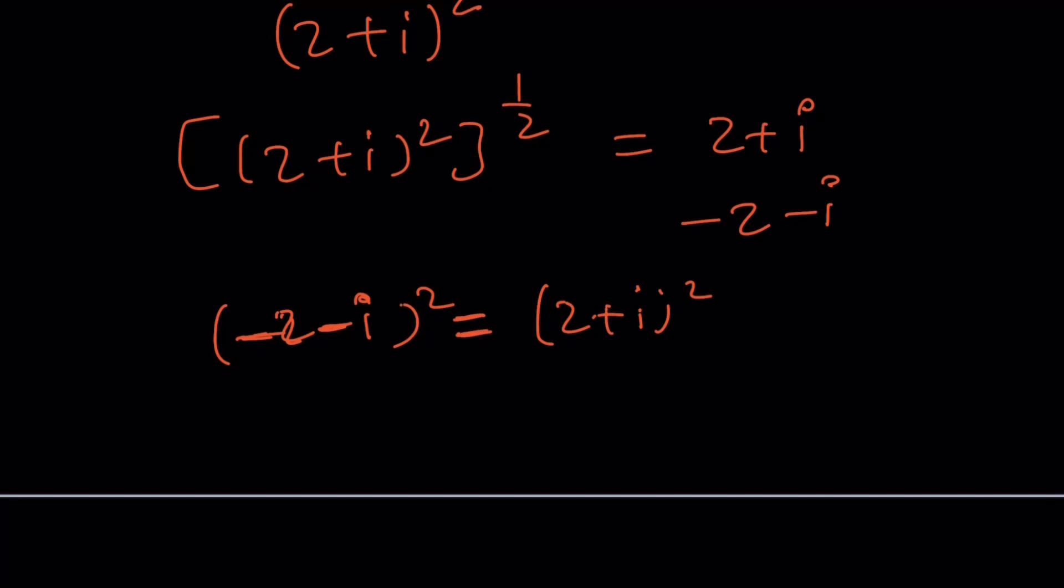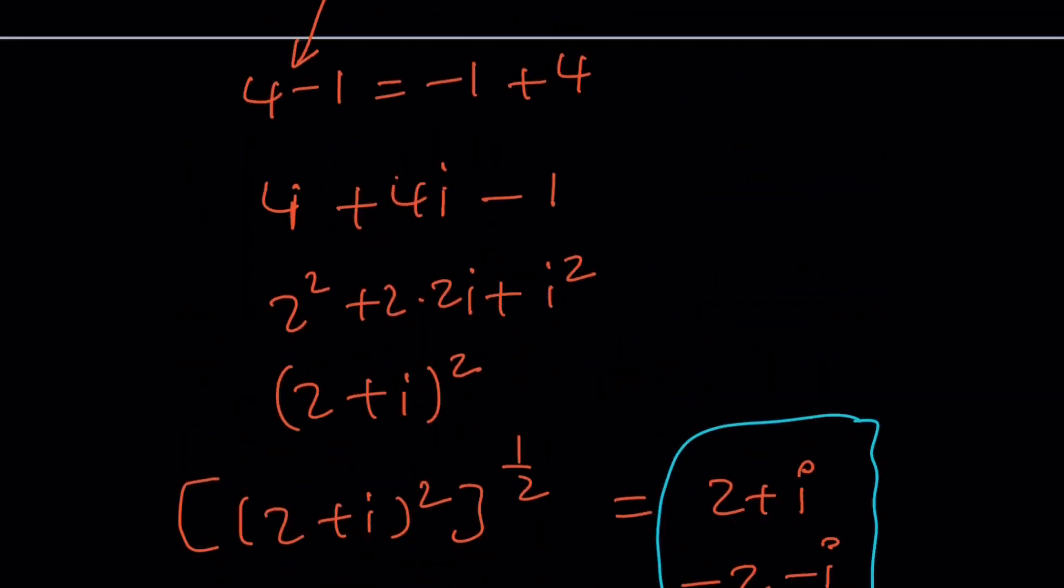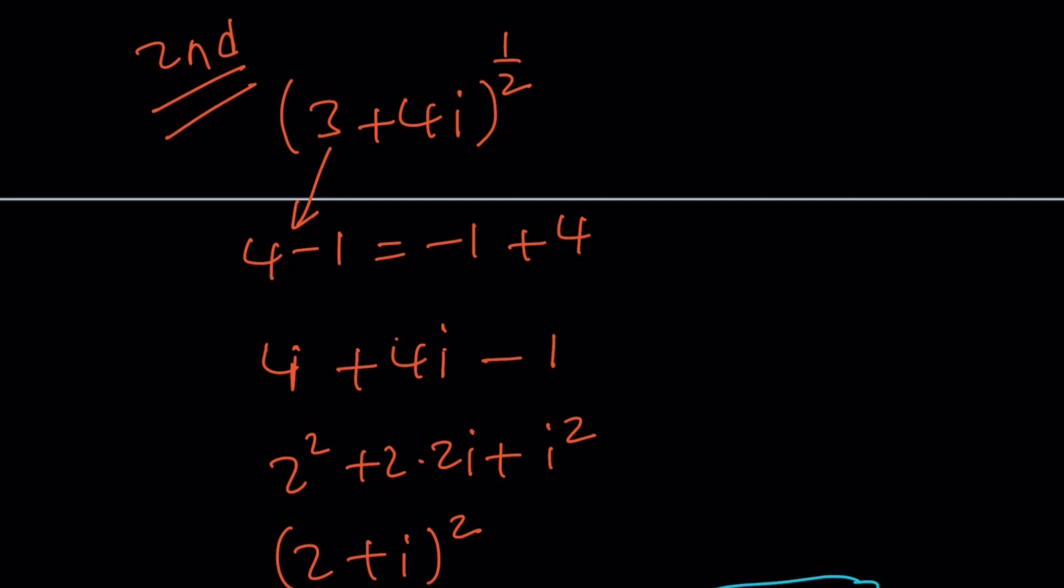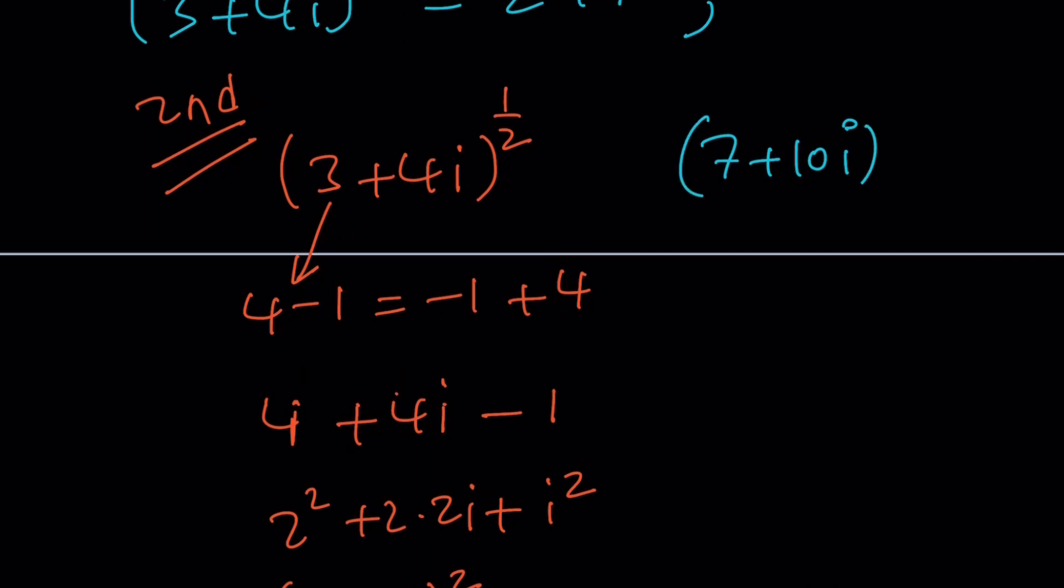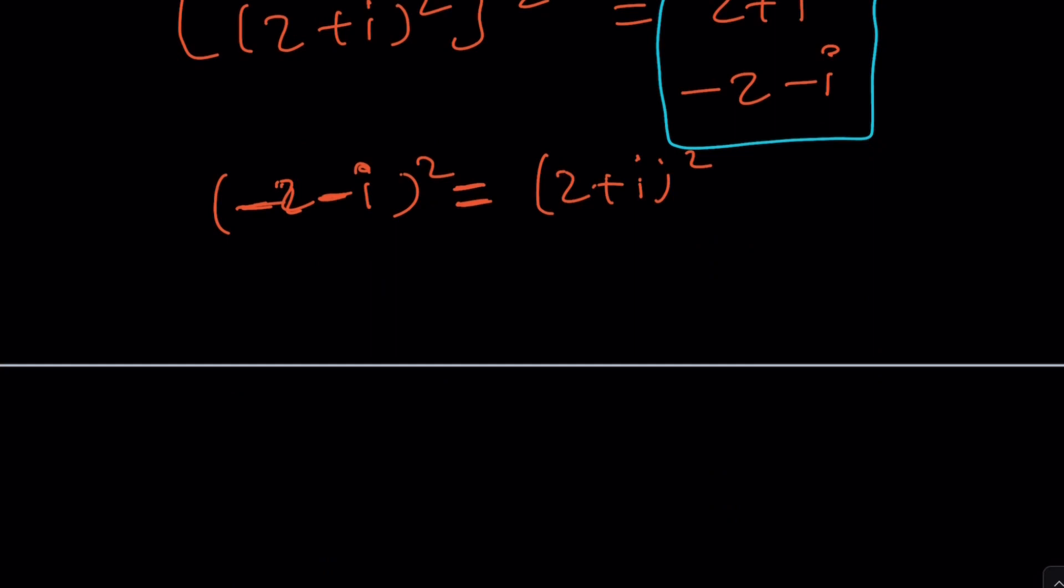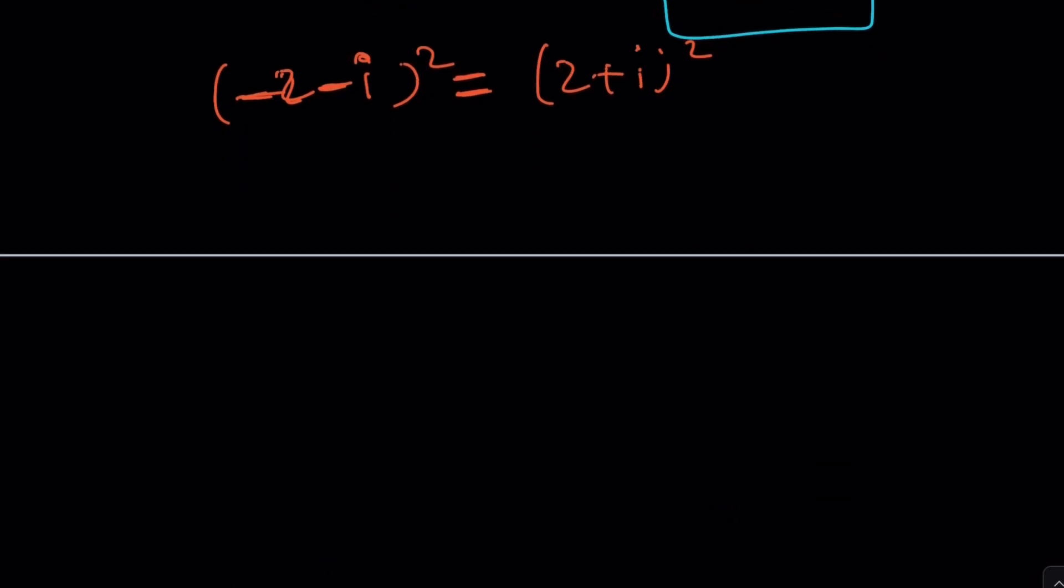So there are two square roots of this number: 2 plus i and negative 2 minus i. So we manipulated the coefficients a little bit, but this was a good one and we got the answer. This doesn't always work. What if you have something like 7 plus 10i? Can you find the square root? Not like that. But can you find it by setting it equal to x plus yi? Yes, you can. That method always works.